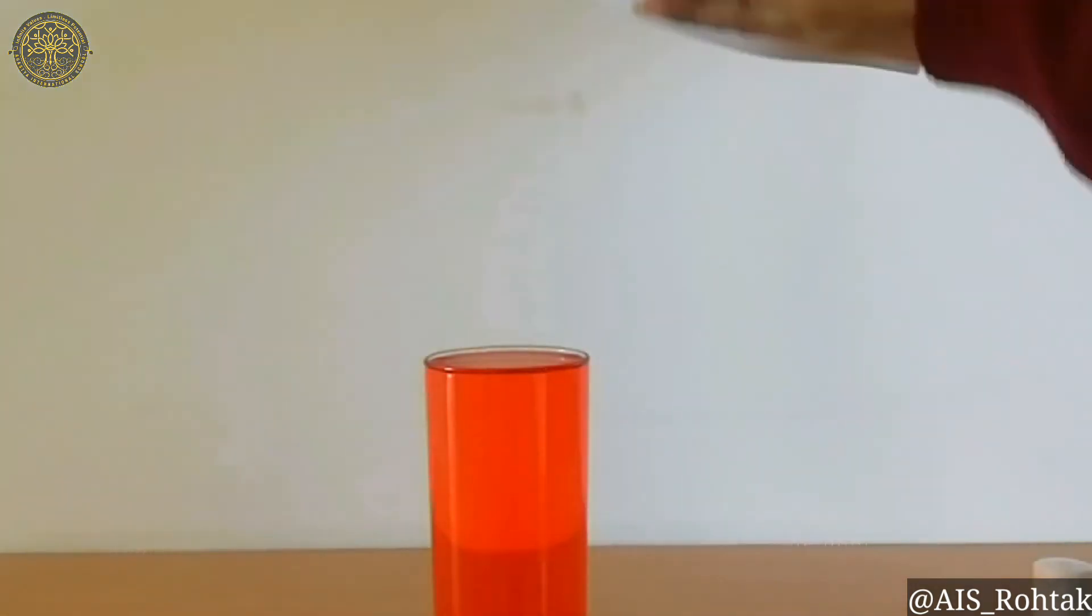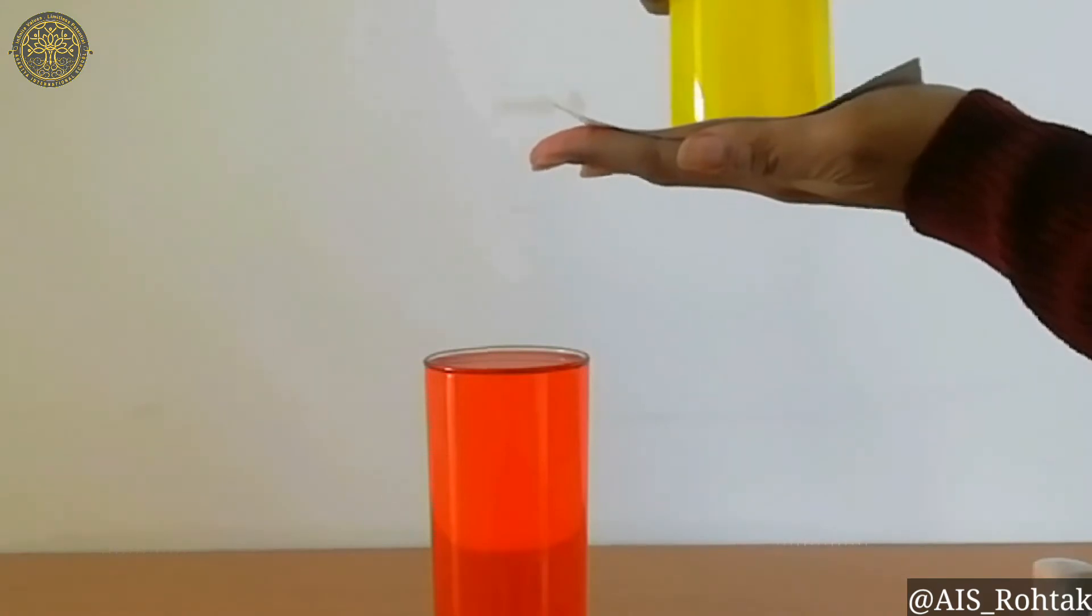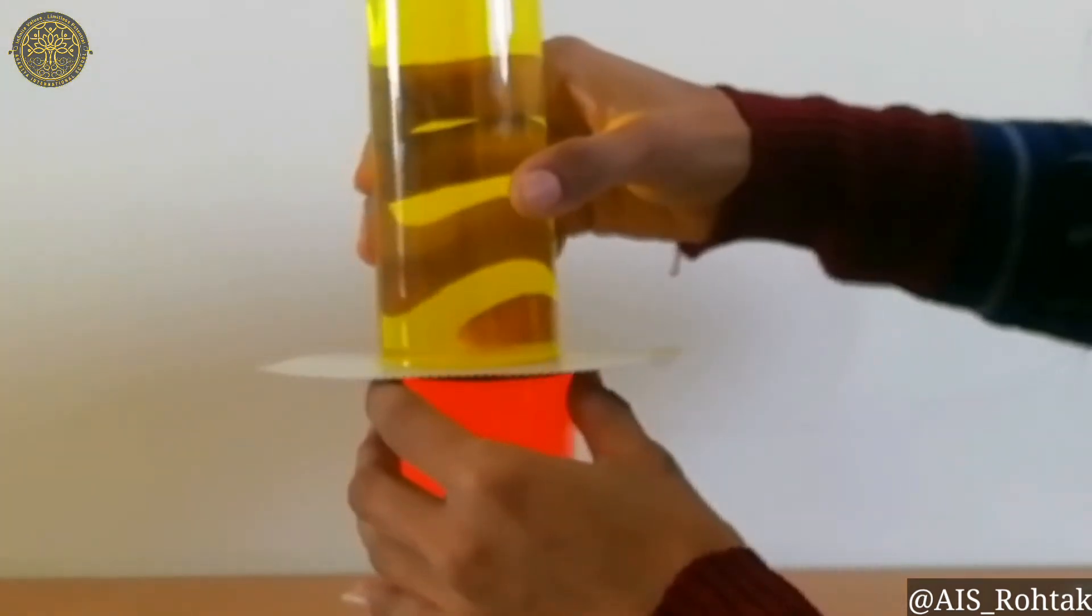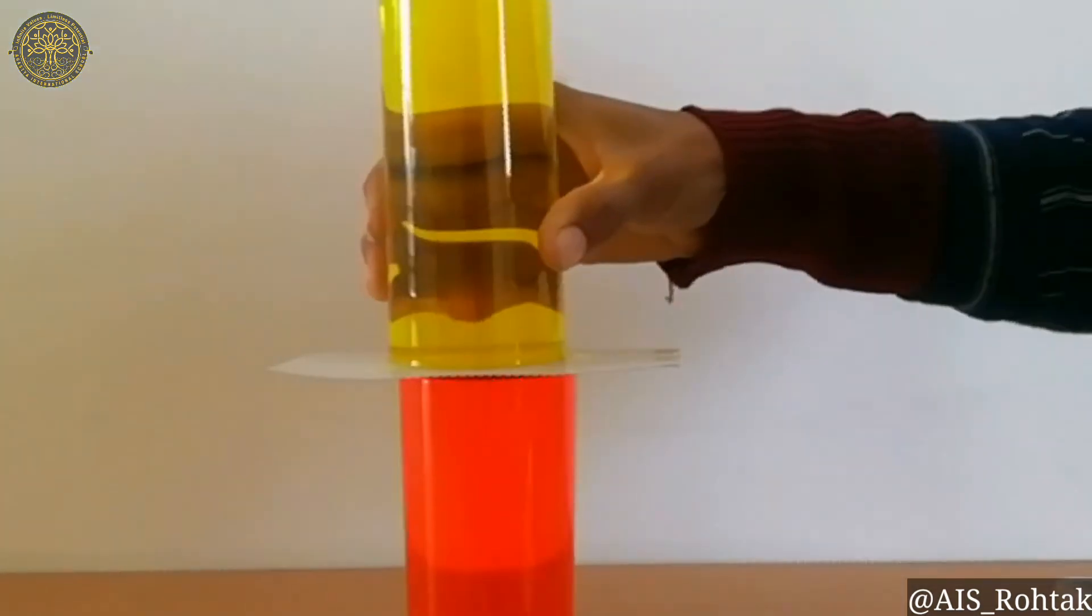And now, pick up the glass and turn it straight upside down. And now, put the upside down of the yellow glass on the top of the red glass. As you can see in the video.